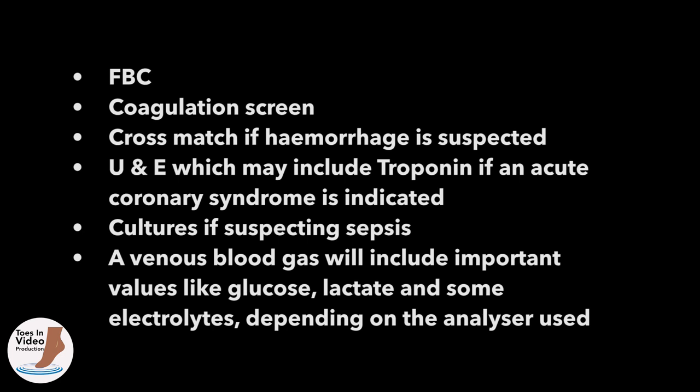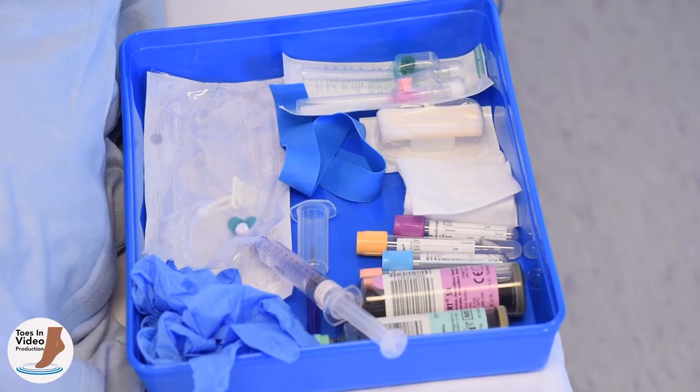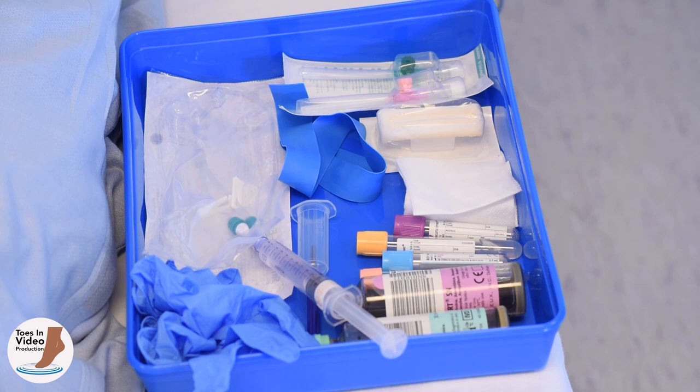Where necessary, take blood samples before infusing any fluids or drugs. Consider FBC, coagulation screen, cross-match if haemorrhage is suspected, U&Es which may include troponin if an acute coronary syndrome is suspected, cultures if suspecting sepsis. A venous blood gas will include important values like glucose, lactate and some electrolytes depending on the analyser used. If you cannot cannulate the patient yourself, ensure the necessary equipment is readily available at the bedside. An arterial blood gas sample requires specialist skills to obtain, but gives key information about the adequacy of ventilation.